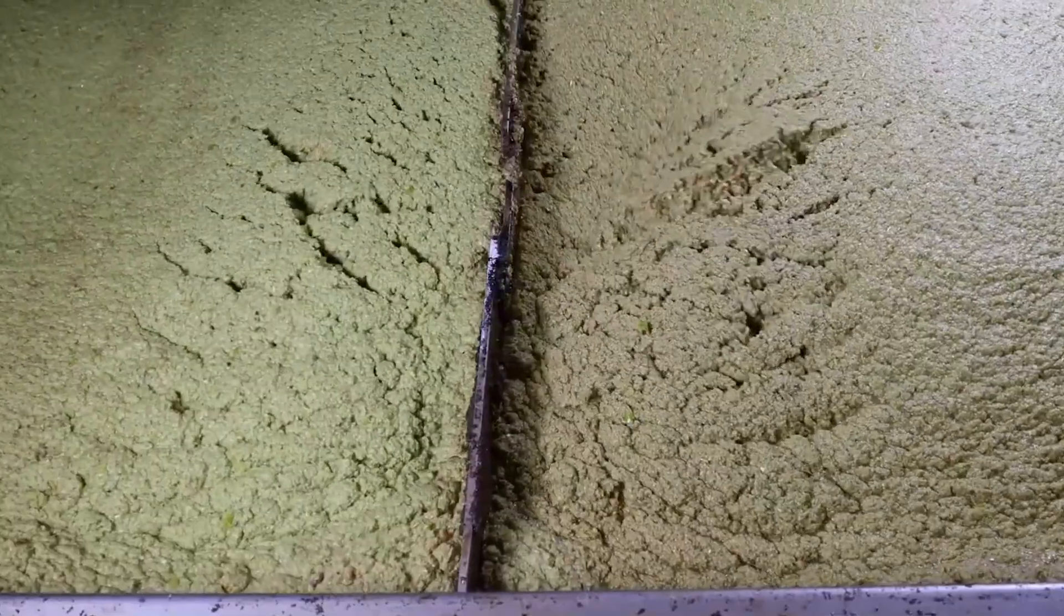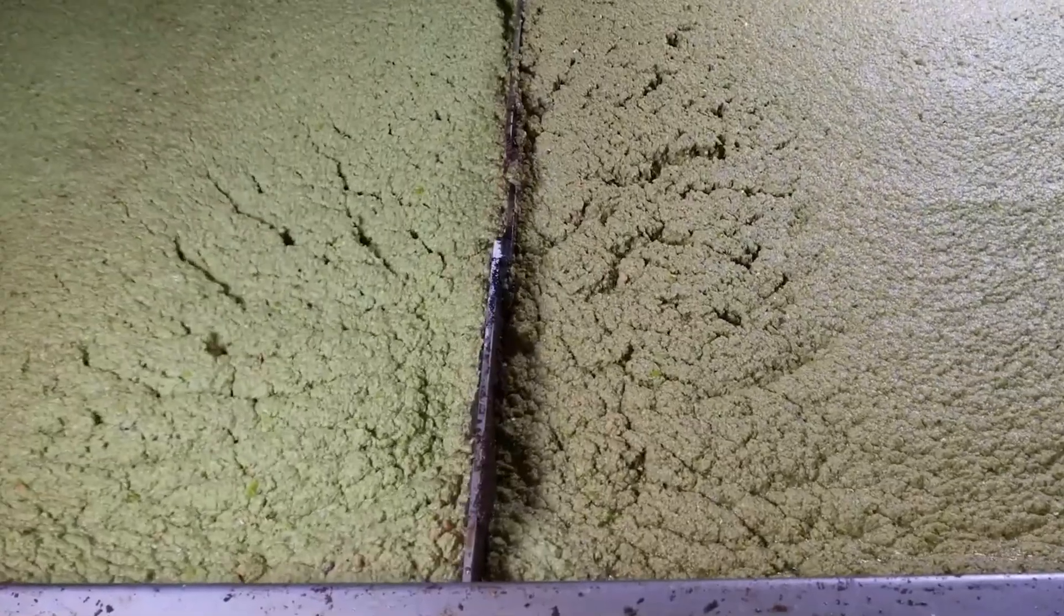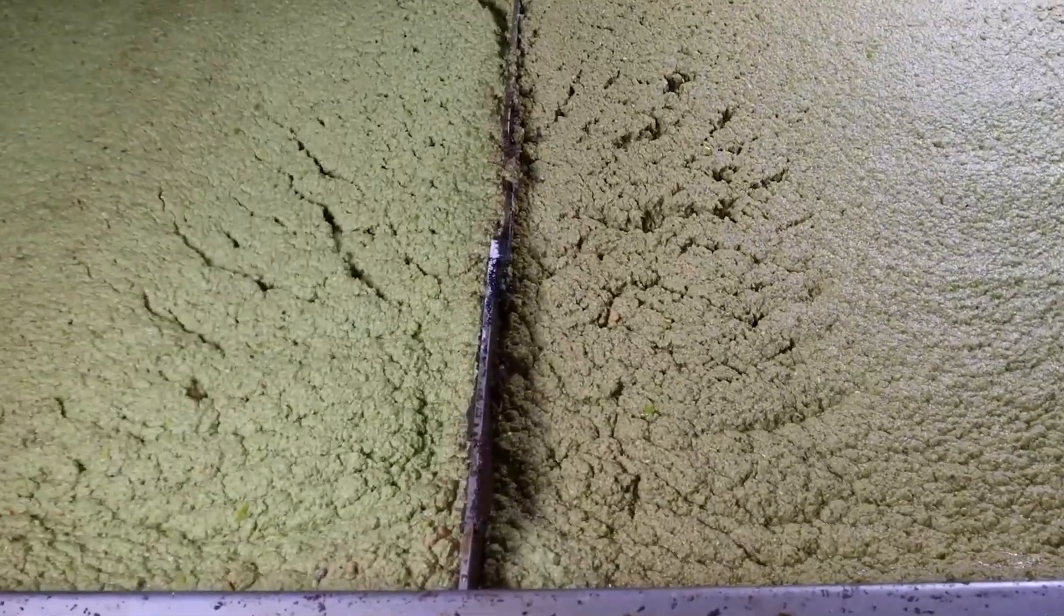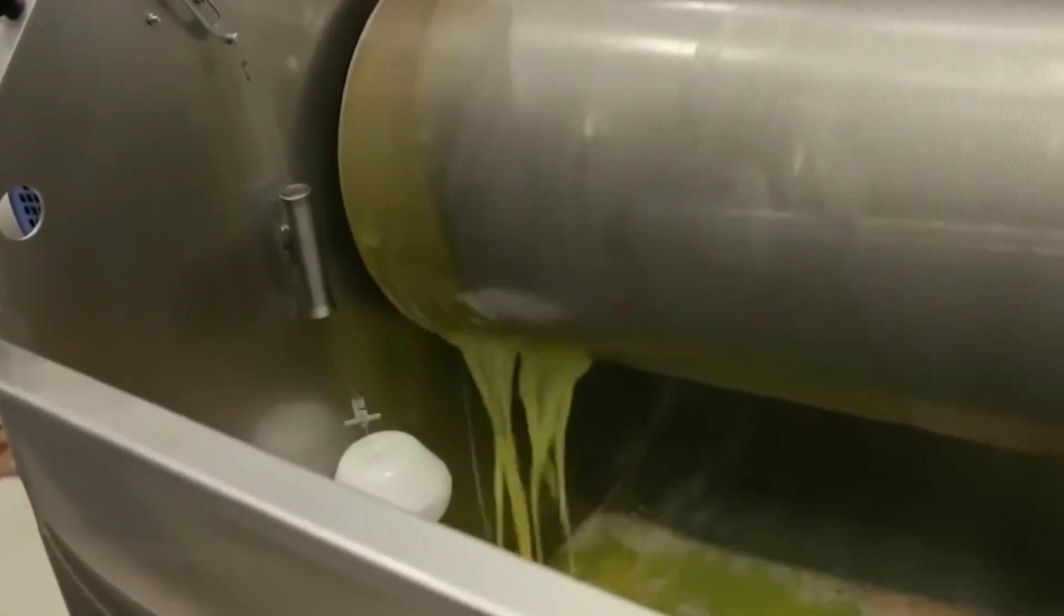Now the paste is mixed and kneaded in a process called malaxation, a kind of massage for olives. This helps tiny oil droplets merge into larger ones, making extraction easier. Temperature and time are crucial. Too hot and the flavor is lost. Too cold and the yield drops.